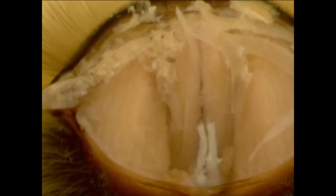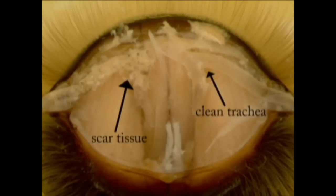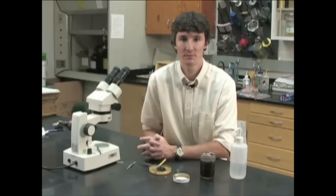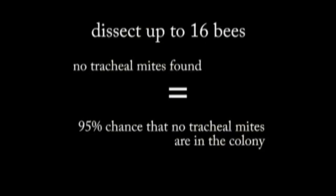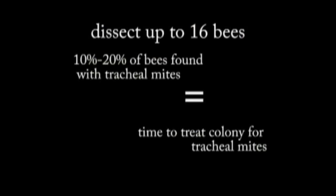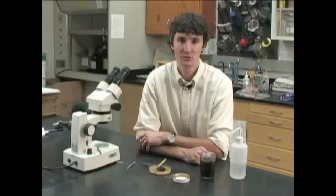At high infestations of tracheal mites, the mites cause scar tissue in the tracheal system, which looks black and can completely cover the trachea — if you see this, the bee is positive for tracheal mites. I recommend dissecting up to 16 different bees; if you find no tracheal mites in any of these, you have a 95% probability of no infestation in the colony. If your bees show a 10 to 20% infestation rate, you need to treat your bee colonies.